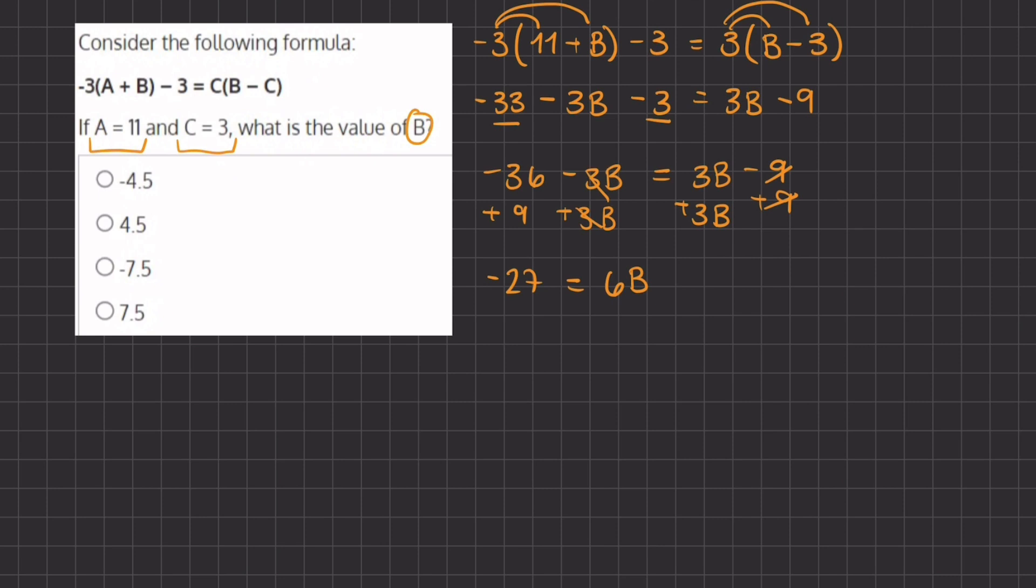All right, so now in order to find the value of b we're going to isolate b and we're going to divide 6 on both sides. And now in order to simplify this negative 27 divided by 6, we are going to break up this negative 27 into negative 24 minus 3 and both are divided by 6 equals b.